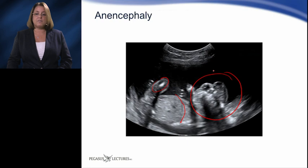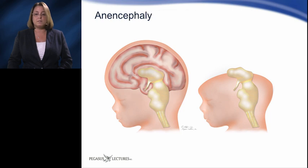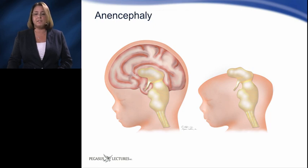On ultrasound, anencephaly presents with visible facial features but no skull is seen, as is the case on this image. Some of the symptoms you might encounter with anencephaly include polyhydramnios after 25 weeks because the fetus lacks the swallowing mechanisms. You may also see absence of the cranium above the orbits, bulging fetal orbits due to the absent frontal bone, giving the fetus a more frog-like appearance. You may also see increased fetal activity due to the irritative effects of exposed meninges and neural tissue.